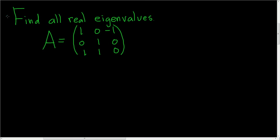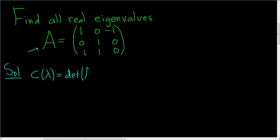Find all real eigenvalues of the following matrix. The real eigenvalues will be the real roots of the characteristic polynomial of A. We'll call it C for characteristic and use lambda. C(λ) is defined to be the determinant of A minus λI.